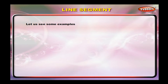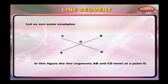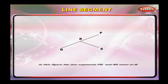Let us see some examples. In this figure, the line segments AB and CD meet at a point O. In this figure, the line segments PQ and RS meet at R.